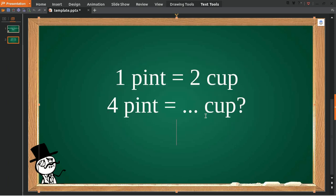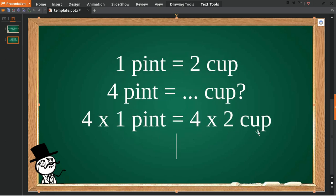the first thing that you do is you put four over here and you multiply it with one pint. And then you give it an equal sign, and because you have four on the left, you must have four on the right as well. And then you multiply it with two cups.